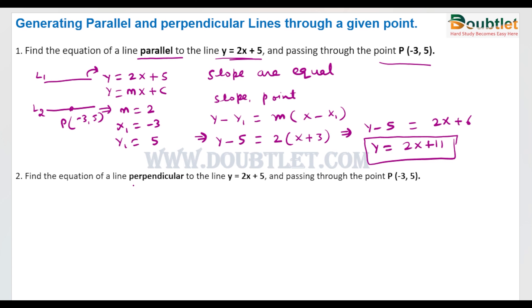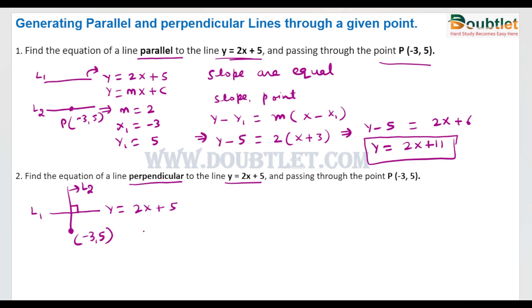Now, if we want to calculate the equation of the perpendicular line to L1 — whose equation is y = 2x + 5 — suppose this perpendicular line is L2, passing through the point (-3, 5). If two lines are perpendicular, then the product of their slopes is -1.